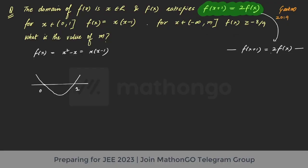Now for x belonging to (−∞, m], find m such that f(x) ≥ −8/9. We have to find the value of m where f(x) = −8/9. It is a tricky problem, but the key is understanding the impact of the functional equation on the overall question.